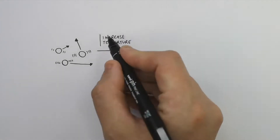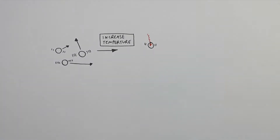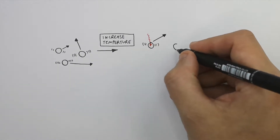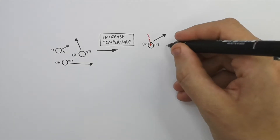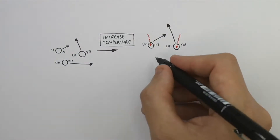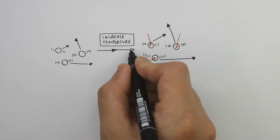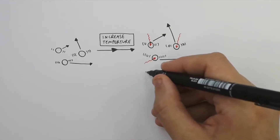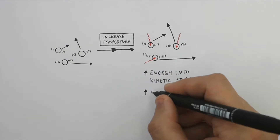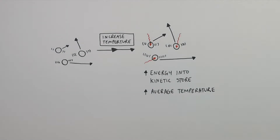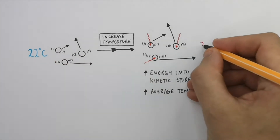To increase the temperature of the particles in a gas, energy must be transferred into the internal energy stores of the particles. By transferring energy into the internal energy stores of the particles, you transfer energy into the kinetic energy stores of the particles. This causes the particles to increase in speed and also increase in temperature. We've increased the average temperature of these gas particles from 22 degrees Celsius to 26 degrees Celsius.